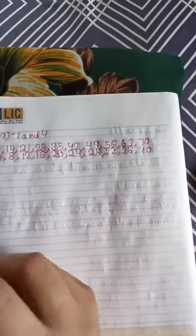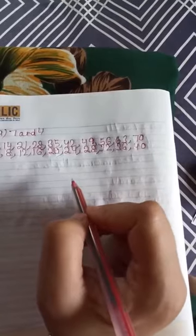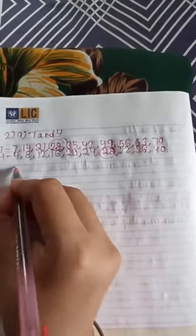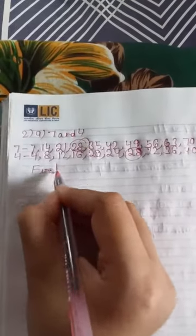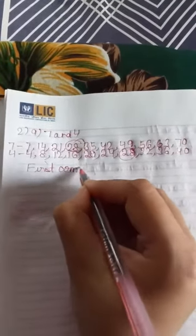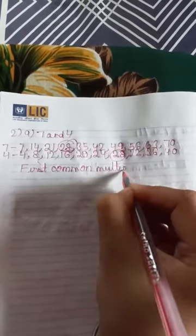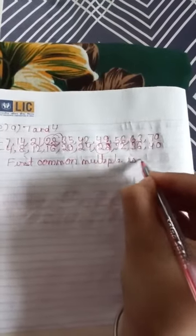So I think the first common multiple is 28 here and 28 here. So we will write here: first common multiple is 28.